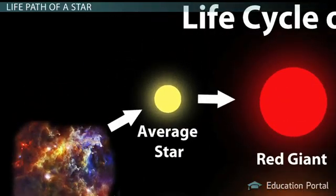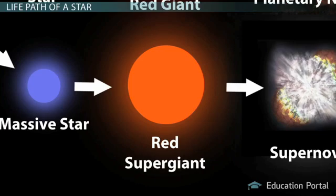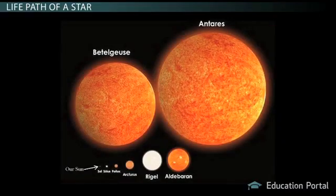Small to medium stars turn into red giants, and big stars turn into red supergiants. These are some of the biggest stars in the universe by volume, although they are not the most massive. Betelgeuse and Antares are the best known examples of a red supergiant.